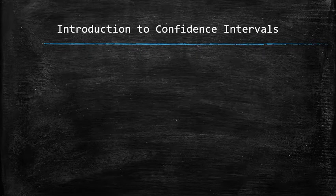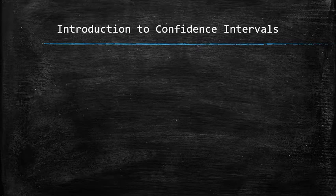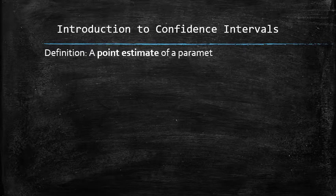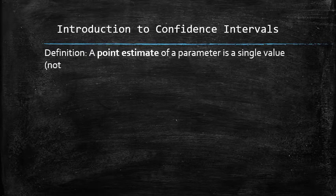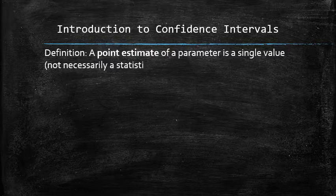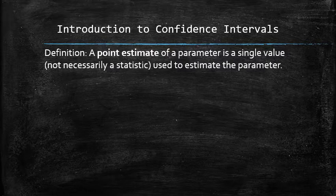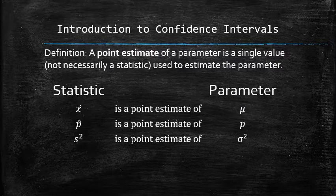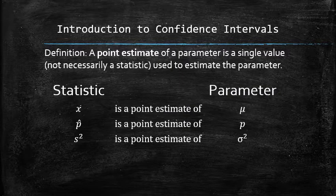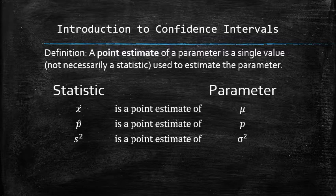The most common application of a statistic is to estimate the unknown parameter. We define a point estimate of a parameter as a single value used to estimate the parameter. The sample mean, sample proportion, and sample variance all can be used as point estimates of their corresponding population parameters. For example, I can use the average age of the students in the class as a point estimate of the average age of all students in the college.